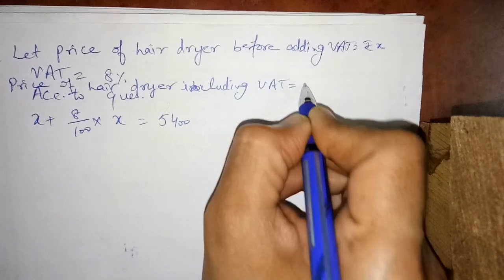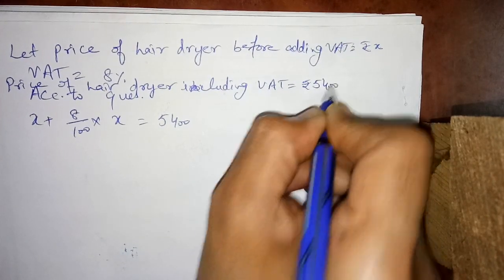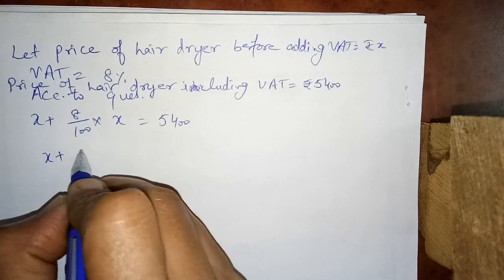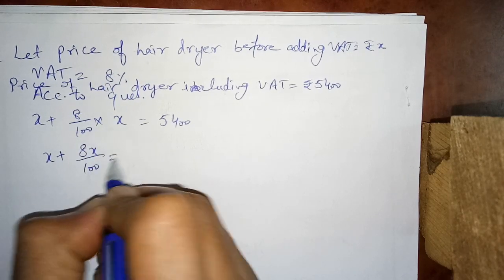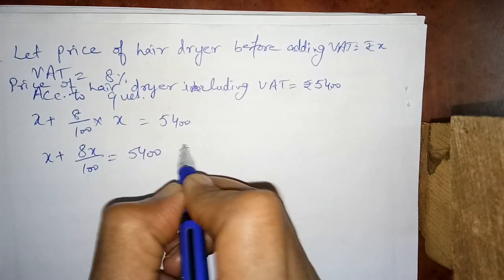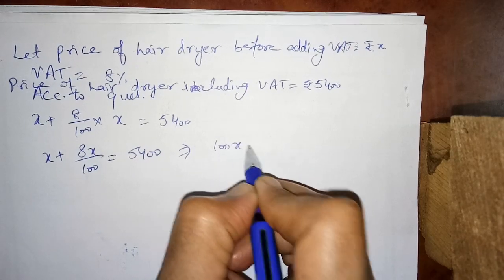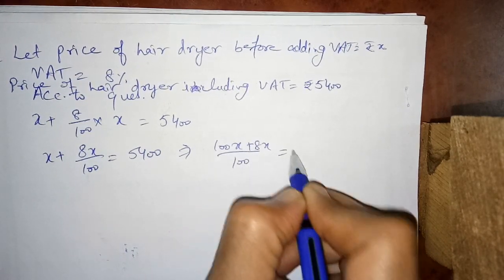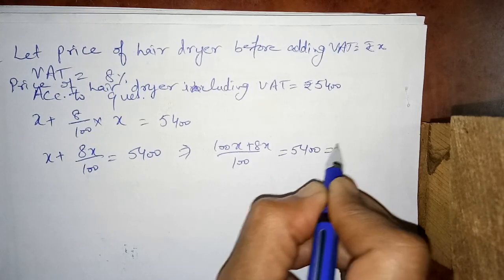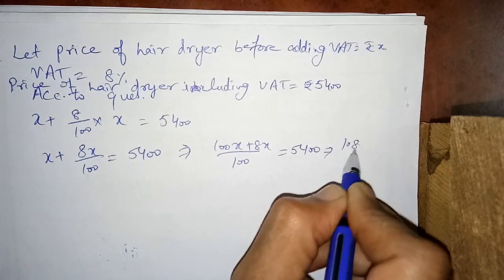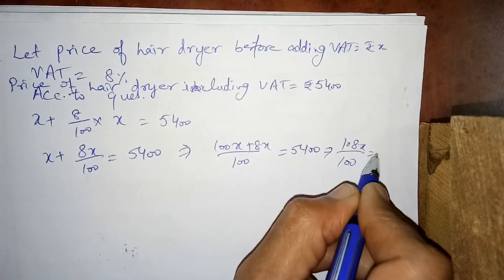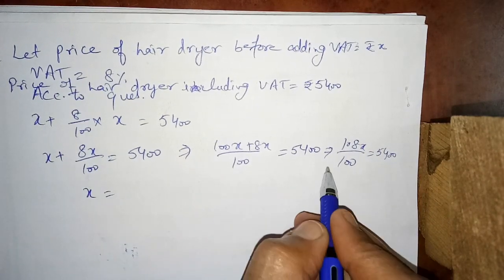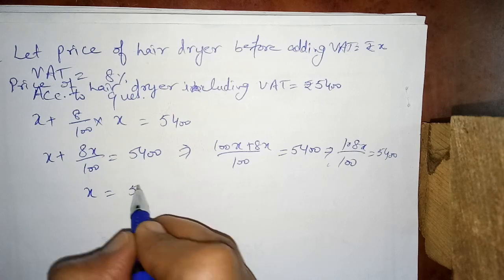Price of hair dryer including VAT is equal to Rs. 5,400. So: x plus 8x/100 equals 5,400. This becomes 100x plus 8x divided by 100 equals 5,400, which gives 108x/100 equals 5,400. We isolate x on one side.